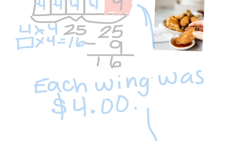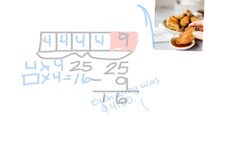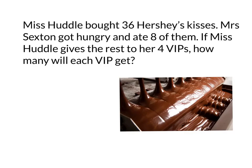We promised the kids a challenge. All right, so just like our problem had two steps, scholars, your problem is going to have more than one step. You can draw a bar model like we did if you want, but you don't have to. Here's your challenge problem: It says Miss Huddle bought 36 Hershey's kisses. Mrs. Sexton got hungry and ate eight of them. Oops, sorry Miss Huddle! It's okay. If Miss Huddle gives the rest to her four VIPs, how many will each VIP get? A VIP is a very important person who has worked super hard during the week — so it's four people sharing the Hershey's kisses equally, except Mrs. Sexton ate eight of them.